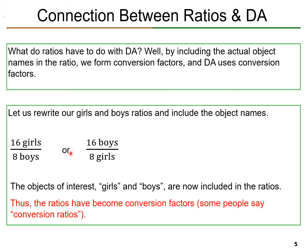Now we can form an equivalent ratio of 16 boys with 8 girls in the denominator. It is very important that you realize that these two conversion factors are equivalent. Which one you use depends on what you are given when you're trying to convert from one unit to another unit. The objects of interest, girls and boys, are now included in the ratios. Thus, the ratios have become conversion factors — some people say conversion ratios. By simply including the objects in the ratios, we form conversion factors. Again, it's very important to realize that these are equivalent.